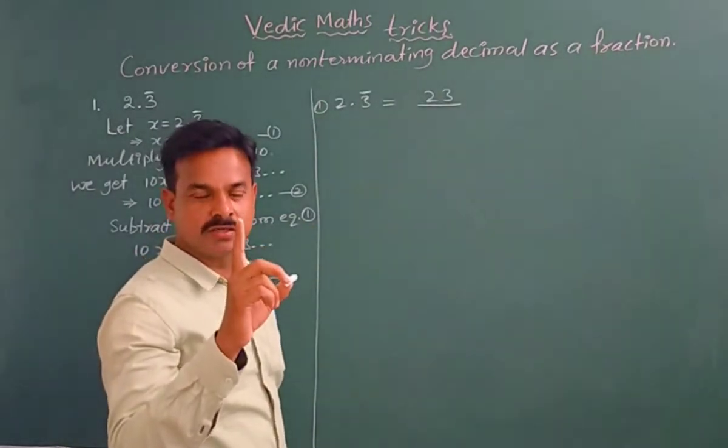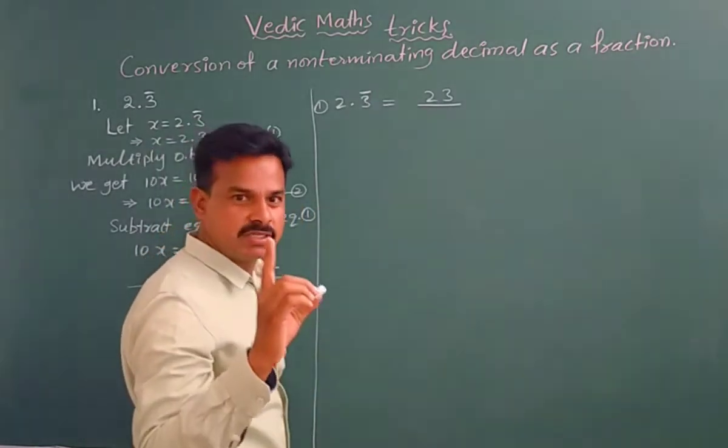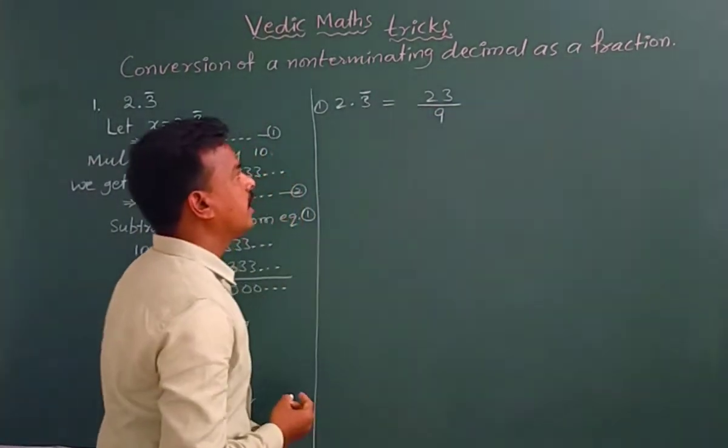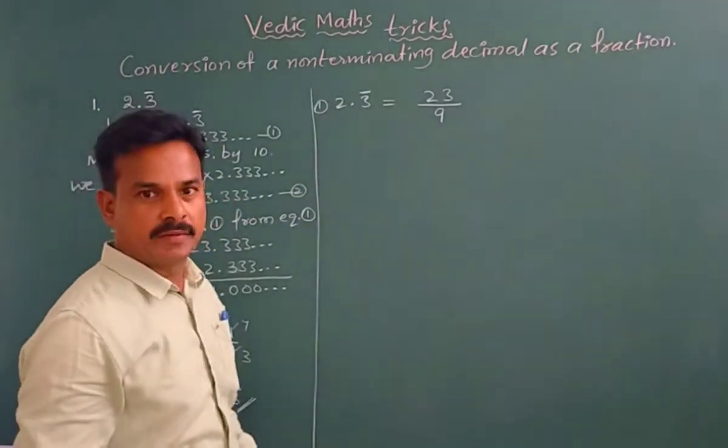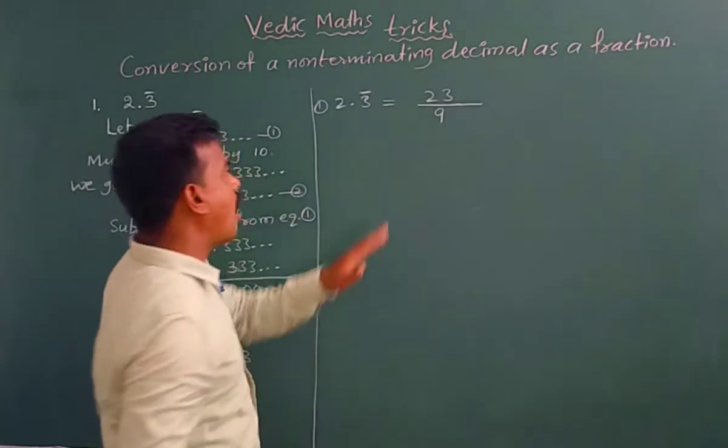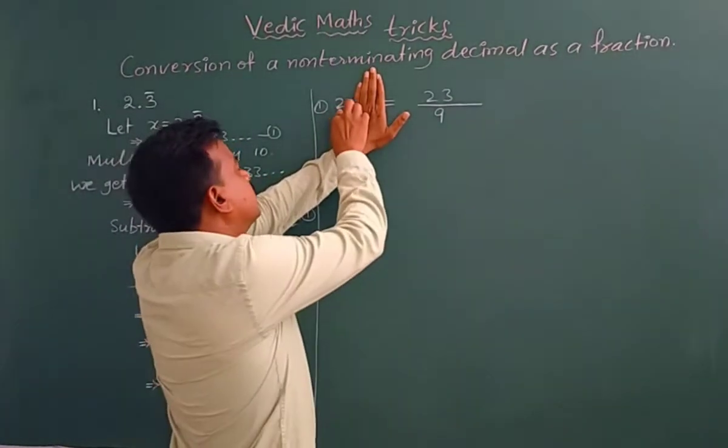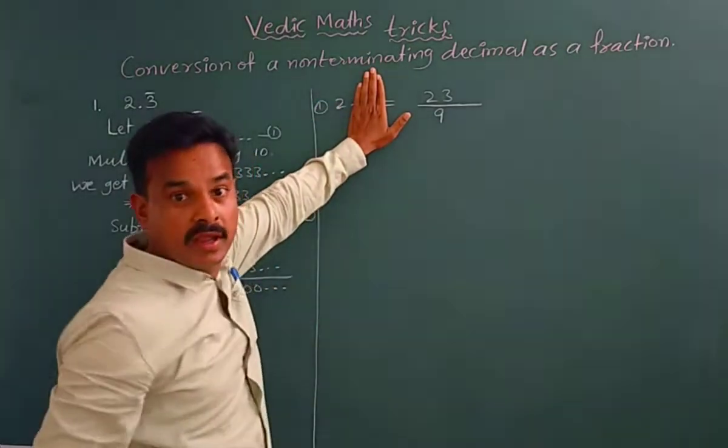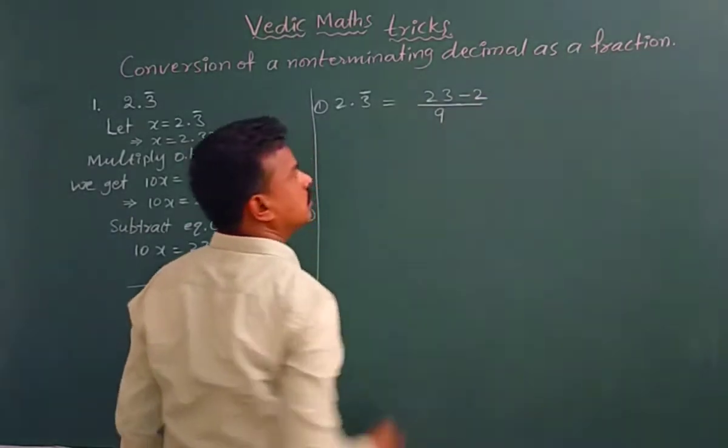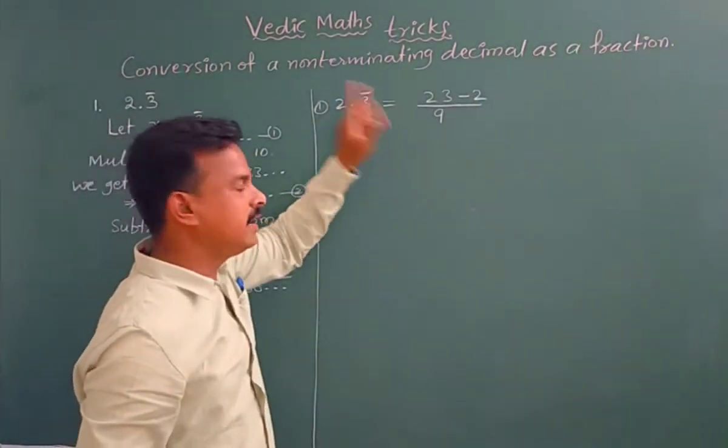Now divide by, how many digits are there under bar? One digit. We have to count how many digits are there under bar, that is one digit. So one nine we have to write in the denominator.